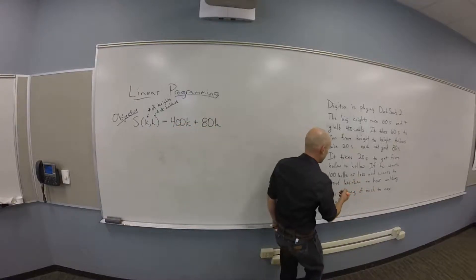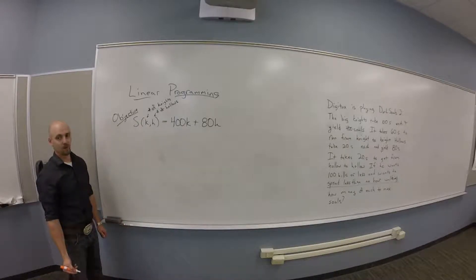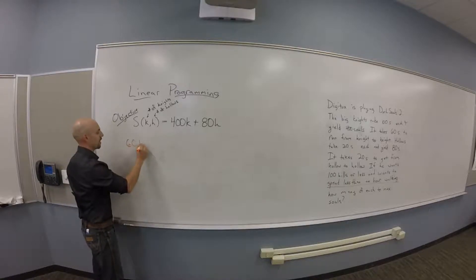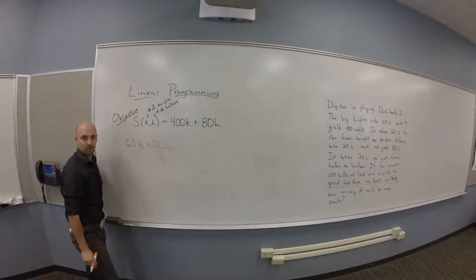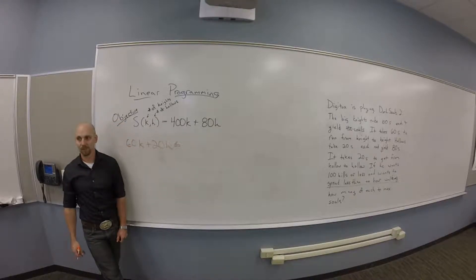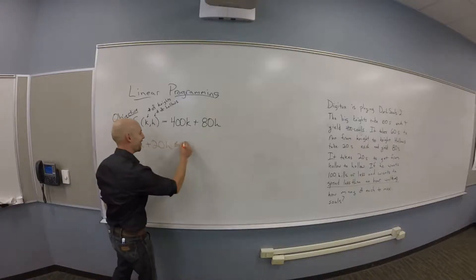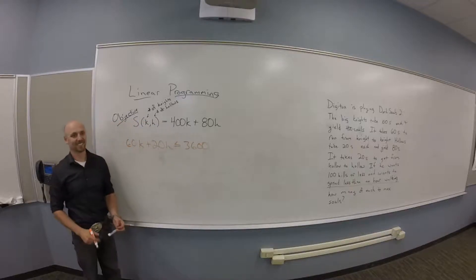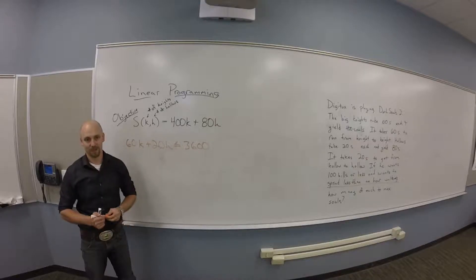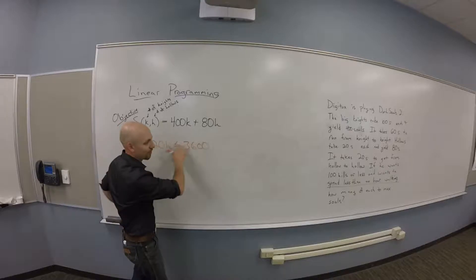You only have one hour. He wants to spend less than an hour walking. That's going to be his transit time. 60 seconds for knights and 20 seconds for hollows walking. That's straight up walking time, not interesting time. That's why he's trying to minimize that piece. How long is an hour in seconds? 3600 seconds. So this is his total time just walking around, and he wants to keep that under an hour. He doesn't want to be bored.